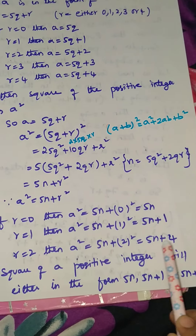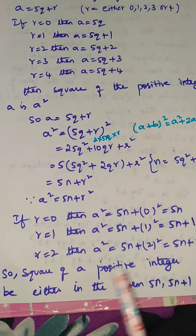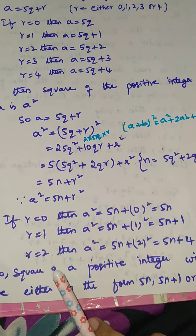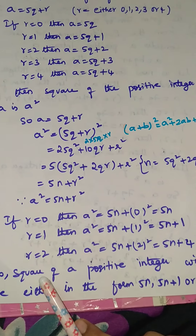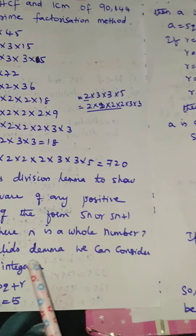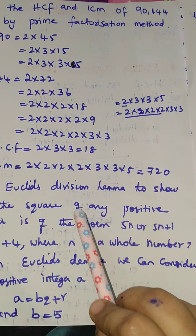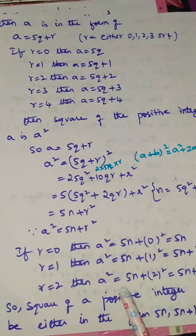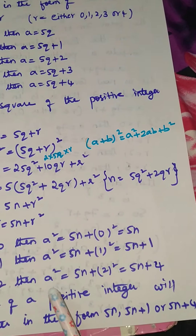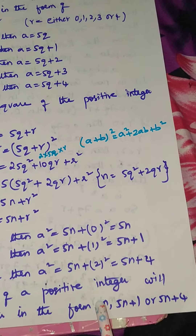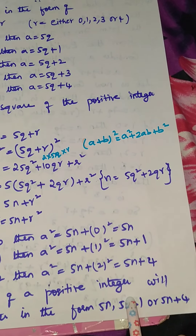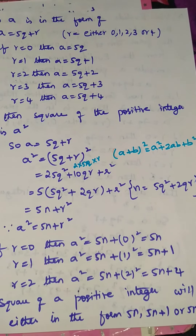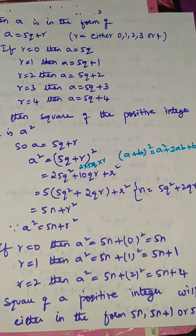Therefore, the square of any positive integer is in the form of 5n, or 5n plus 1, or 5n plus 4.